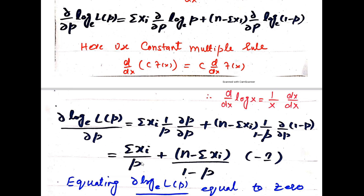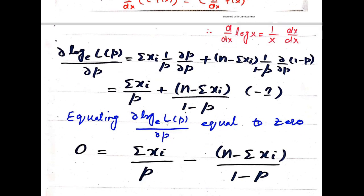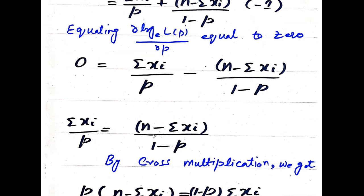So we have: Σxi/p + (n - Σxi)·(-1)/(1 - p). Setting ∂ log L(p)/∂p = 0 gives: 0 = Σxi/p - (n - Σxi)/(1 - p). Taking the second term to the other side: Σxi/p = (n - Σxi)/(1 - p).